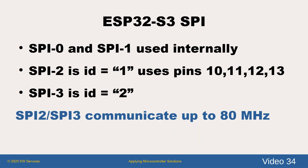Let's talk about the ESP32 S3's SPI devices. The chip has four serial programming devices. SPI 0 and SPI 1 are special devices used internally by the chip, so the general purpose SPI 2 and SPI 3 are the only ports available to us. In our software, these devices are known by the ID either 1 or 2. By the way, these devices can use DMA and so are able to communicate up to 80 megahertz.